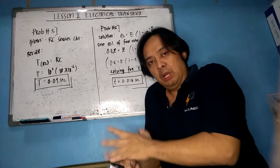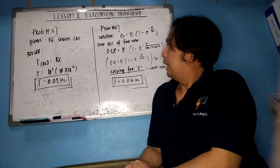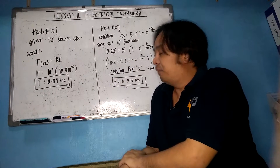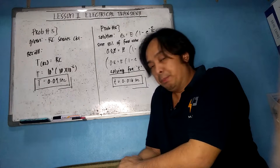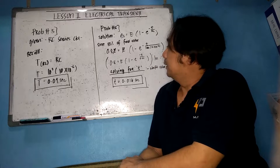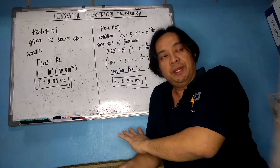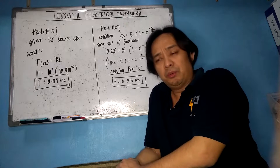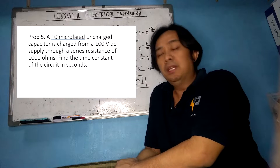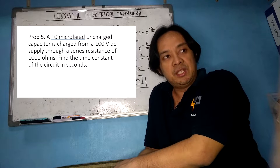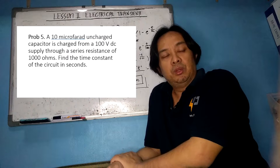Now let's move to problems 5 and 6, which I have integrated because the solutions are simple. Problem number five: a 10 microfarad uncharged capacitor is charged from a 100 volt DC supply through a series resistance of 1000 ohms. Find the time constant of the circuit in seconds.